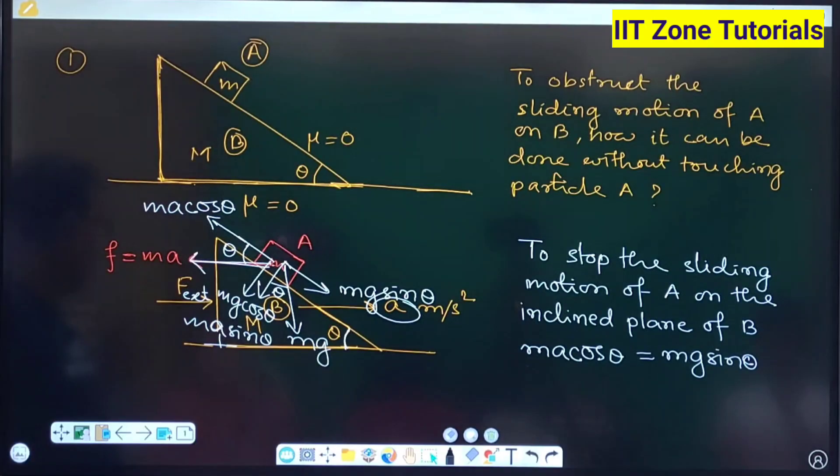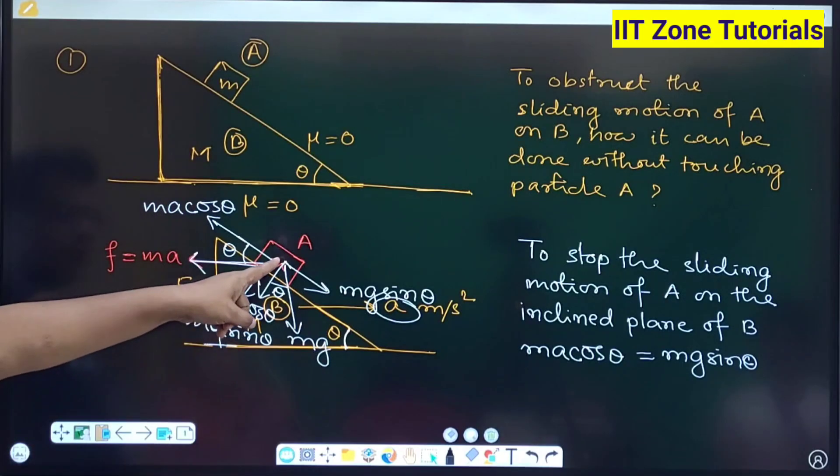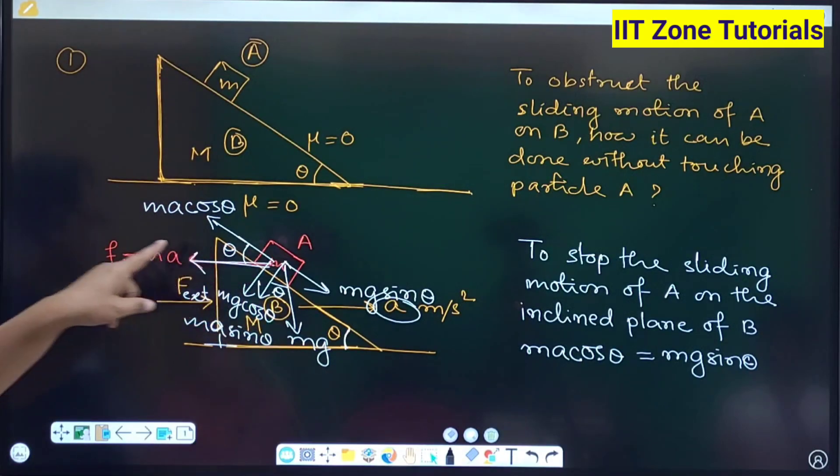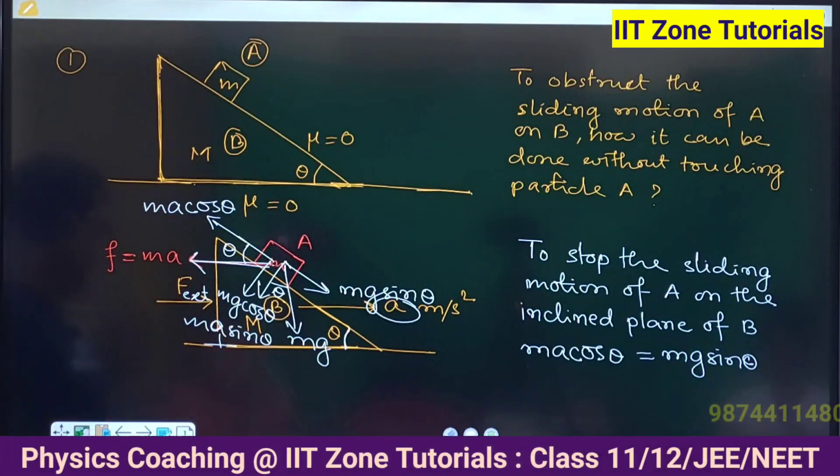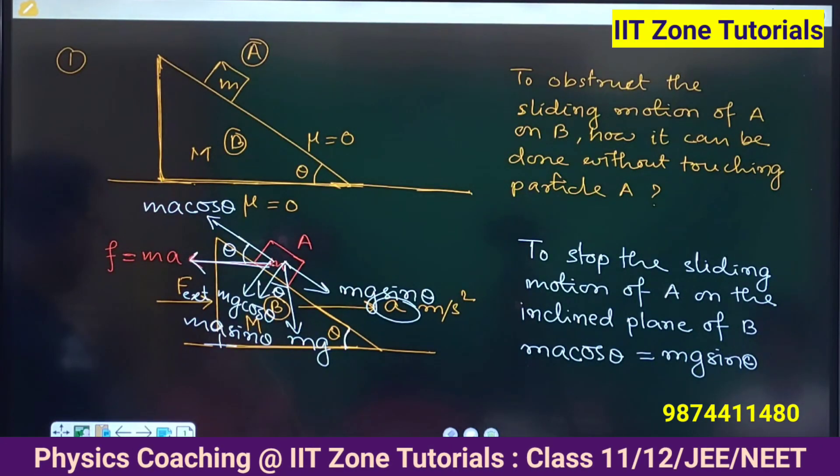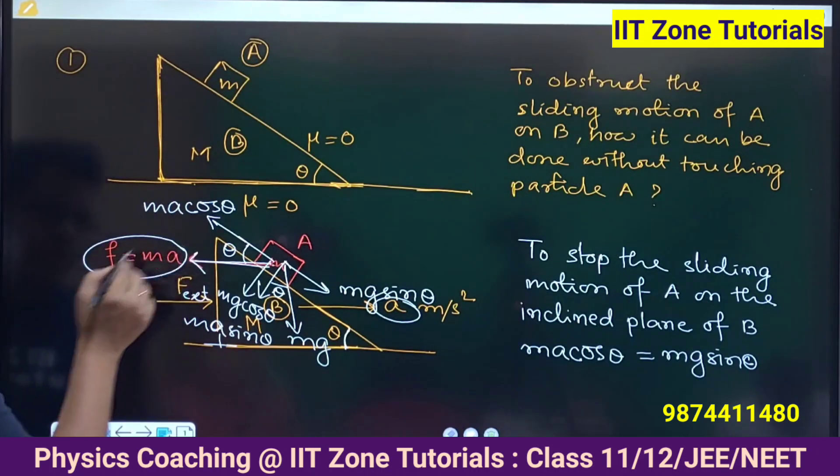So small m will receive the pseudo force on the contact of non-inertial reference, right. So that is why being pseudo force received by small a, so that pseudo force value will be the mass of that object who is receiving it into acceleration. So that is why it is small m into A, right. So small m into A, this is the pseudo force, right.